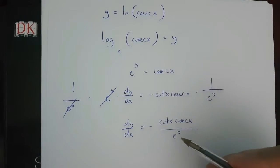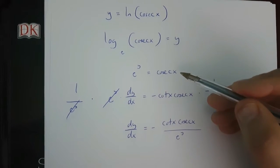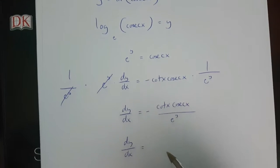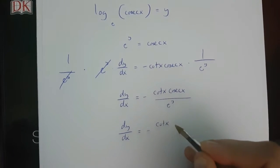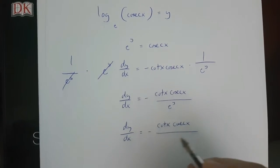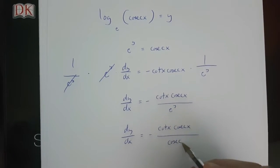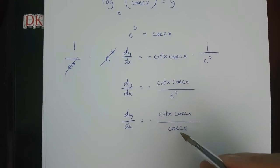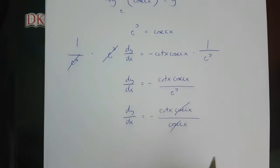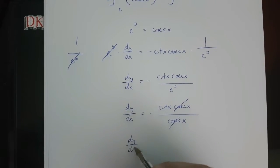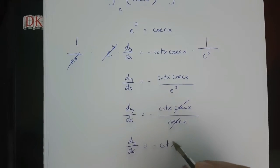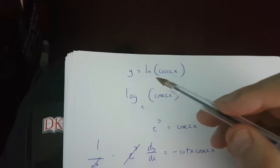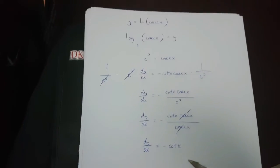It turns out that e to the power of y is cosec x. So dy over dx is equal to minus cot x times cosec x over cosec x. Because there's a cosec x up here and one down here, what we're left with is dy over dx is equal to minus cot x. And this is y equals ln cosec x differentiated.